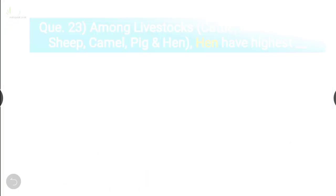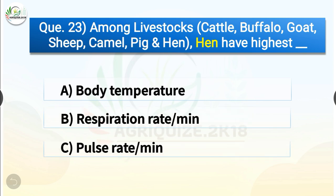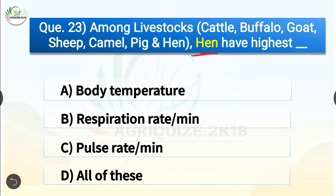Question number 23. Among livestock — cattle, buffalo, goat, sheep, camel, pig and hen — hen has the highest dash. The options are body temperature, respiration rate per minute, pulse rate per minute, or all of these. The correct answer is option D, all of these. So among livestock, hen has the highest body temperature, respiration rate per minute and pulse rate per minute.